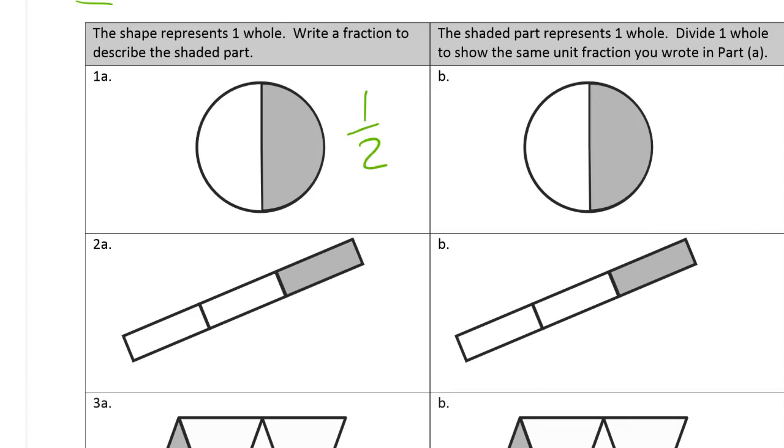If this circle is a whole, then the shaded part is one half of the circle. And now in this column it says the shaded part, not the shape, the shaded part represents one whole. And it says divide one whole to show the same unit fraction I wrote in part A. So now I have to divide this to show halves. And it's got to come from the center. I'll try to make it go straight out like that so they look the same. So this would be half and this would be half.